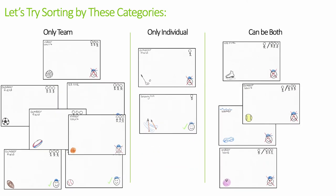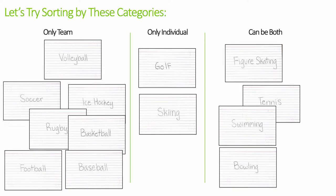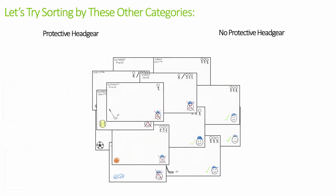Now that we have them all sorted, we can look at the similarities and differences between them. Let's flip them over to see what terms they are. Now let's try sorting by these other categories — either protective headgear or no protective headgear.